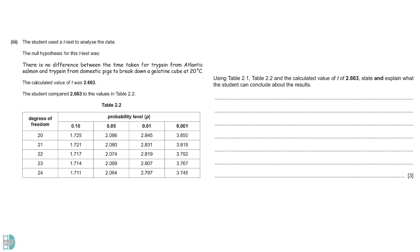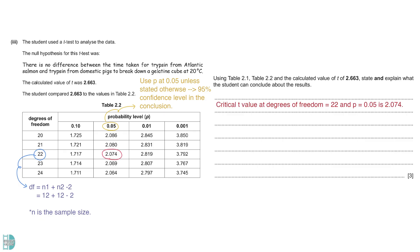Part 3 is about the t-test used to compare the data. The calculated t-value has been provided. In biostatistical tests, we usually refer to the critical probability of 0.05 unless stated otherwise. This means we want to have a 95% confidence level in our conclusions. The degree of freedom in a t-test is calculated by N1 plus N2 minus 2. Ns are the sample sizes of the two datasets. In our case, it is 22. The intersection of critical probability and the degree of freedom indicates the critical t-value.